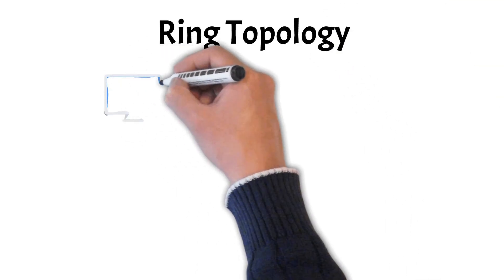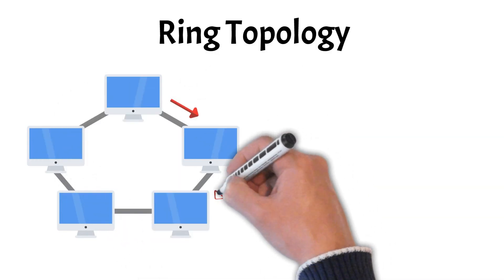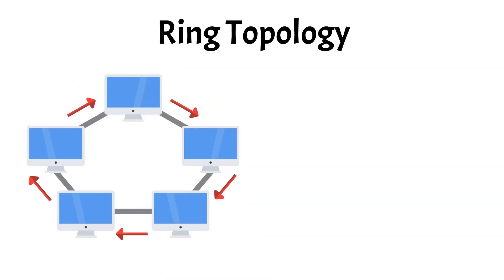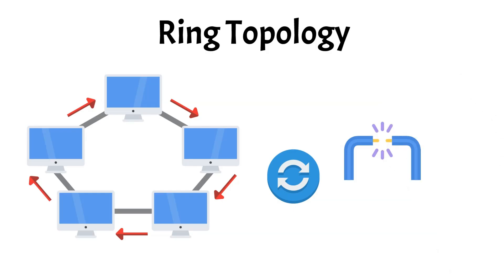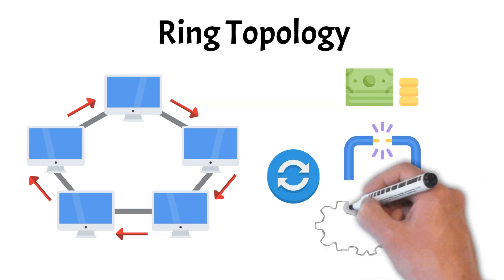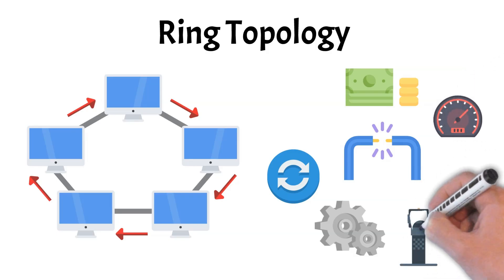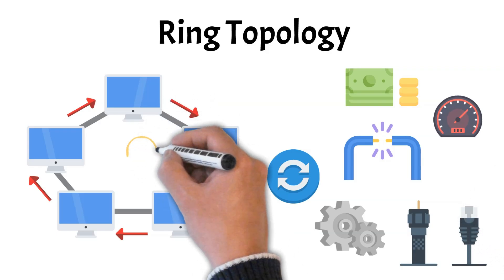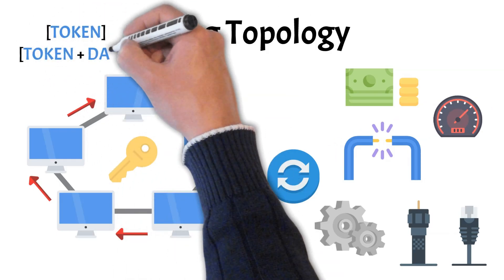Moving on, we have the ring topology. In a ring topology, every device is connected to exactly two others, forming a closed loop — much like traffic moving around a roundabout. Data travels in one direction, passing through each device until it reaches its destination. This design keeps communication organized, but if one cable breaks, the entire connection is disrupted. Compared to a bus topology, the ring is slightly more expensive and harder to set up, but it can achieve faster data transfer, especially when using a token ring. In a token ring, a small 3-byte token circulates around the network, and a device can only send data when it holds the token.